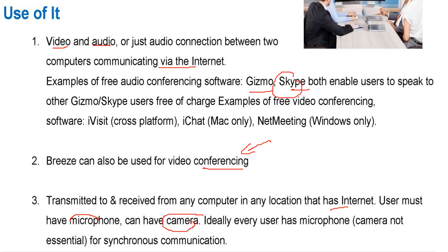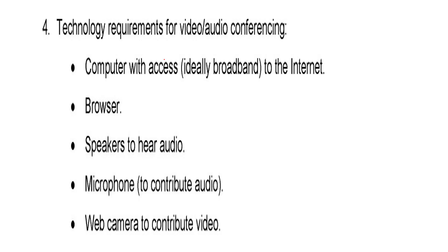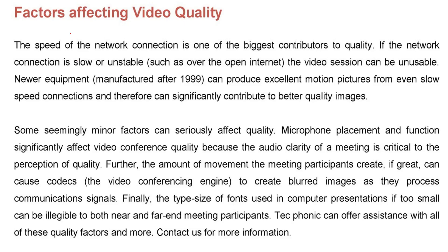When you have internet, just by using a camera and a microphone you can have synchronous communication — transmission to and fro of audio and video at the same time. The gadgets required for video and audio conferencing are: a computer with a good internet connection, a browser or the application used for conferencing, speakers to hear audio, a microphone, and a web camera to contribute video.